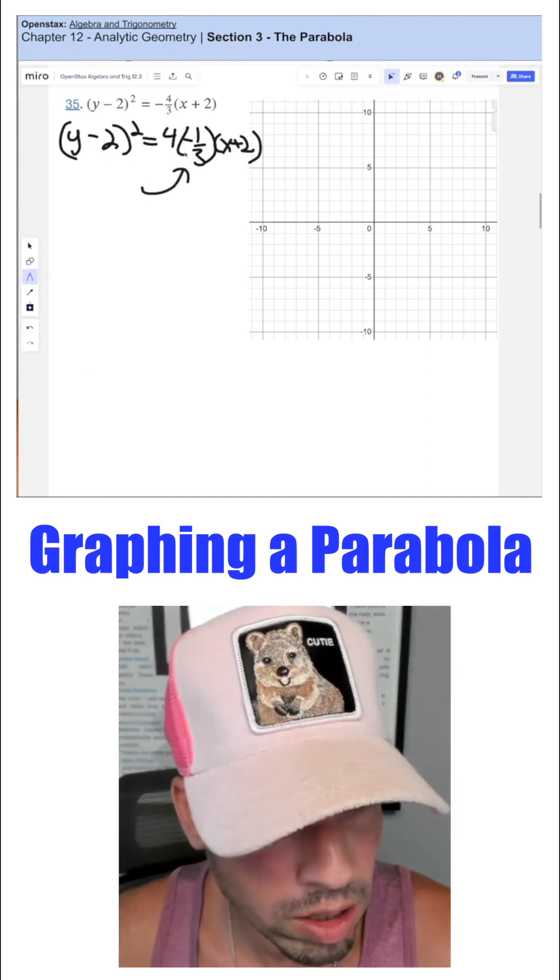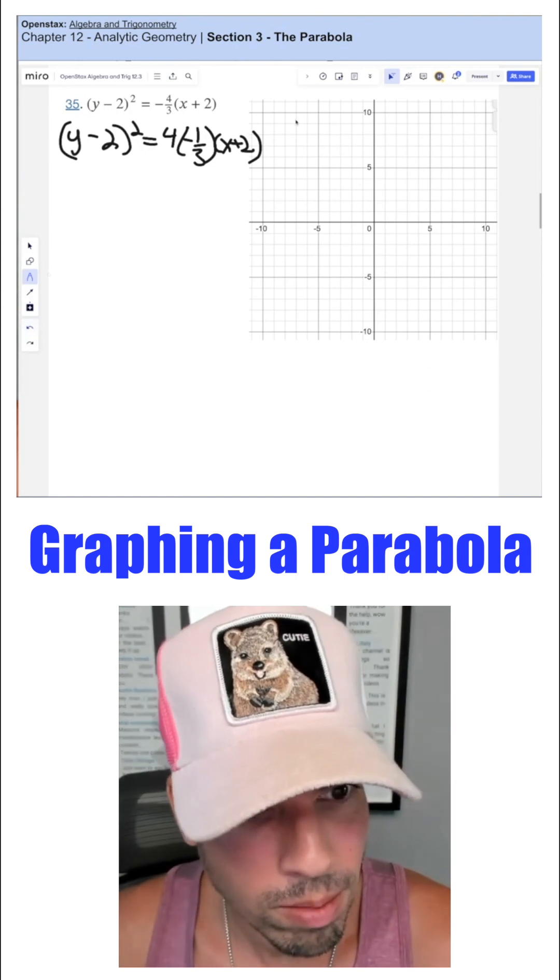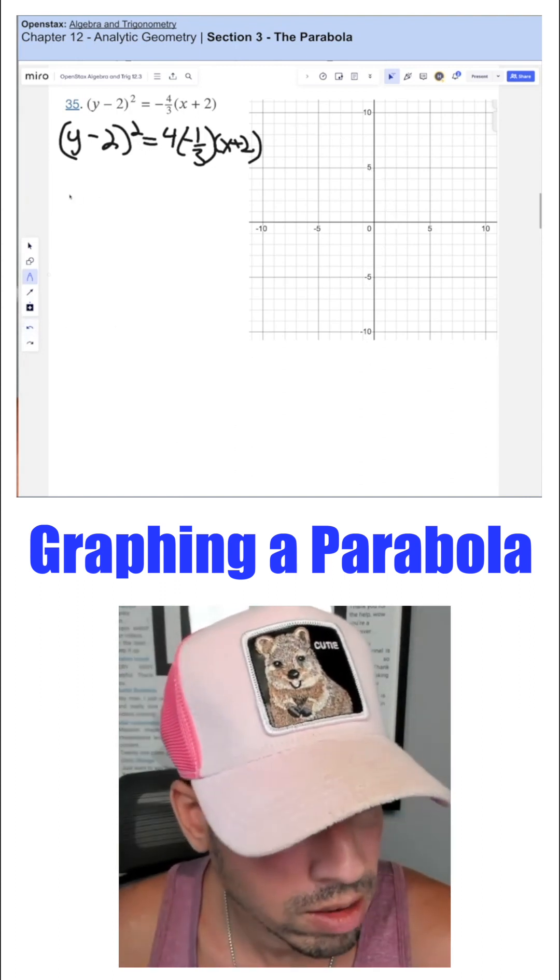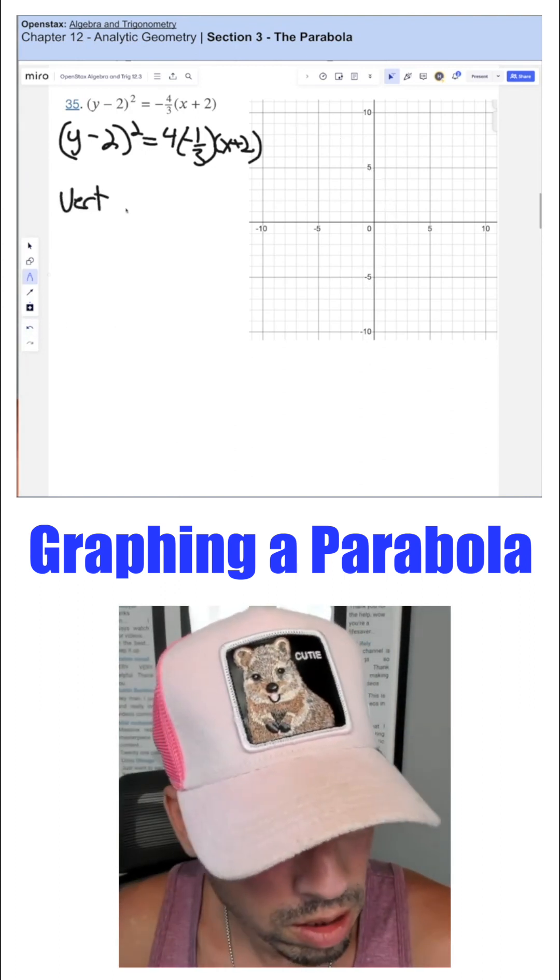Again, it's y squared, and it's a negative p value. So that means we're opening this way. Okay, now let's get all the critical points. So first, let's get the vertex, let's get the focus.